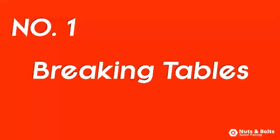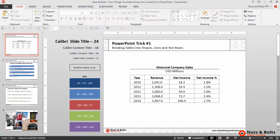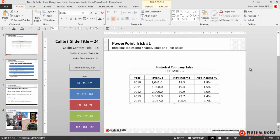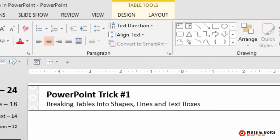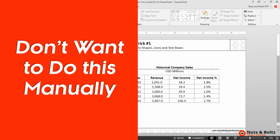Number one: breaking tables into shapes, lines, and text boxes. Here in PowerPoint I have a default non-formatted table. You can see the Table Tools tab up there in my ribbon. What I want to do is get all of the information out of it so that everything is sitting in its own individual text box that I can then use however I see fit, and I obviously don't want to retype any of the information manually.